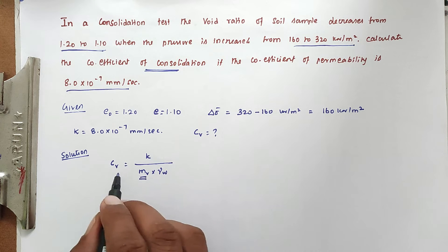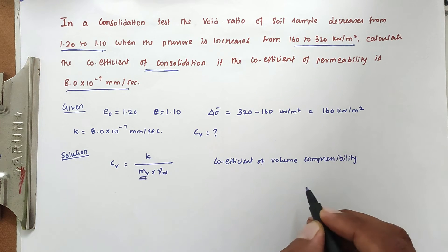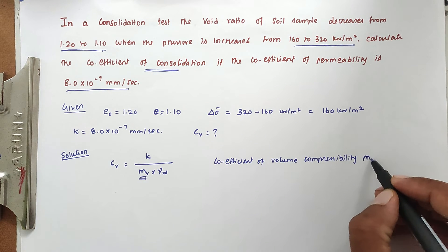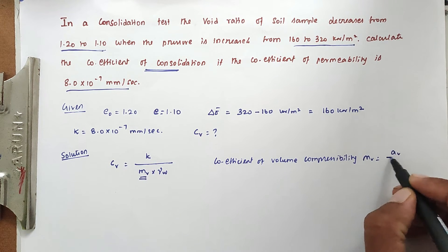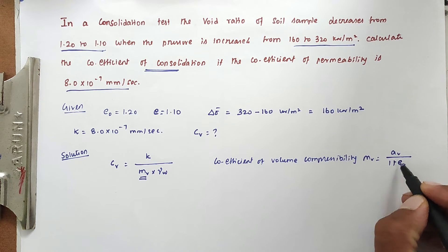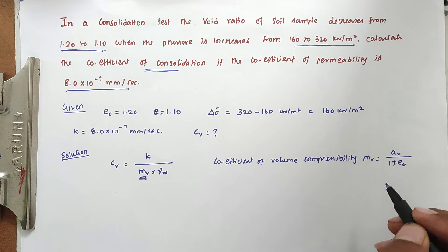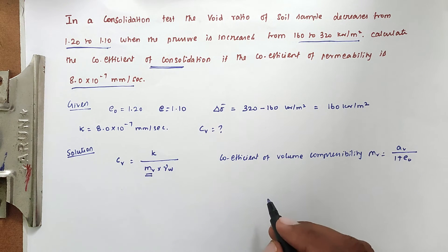After that we can find out the coefficient of consolidation. Coefficient of volume compressibility mv equals av divided by 1 plus e₀. Now we have to find out the av value, that is coefficient of compressibility.